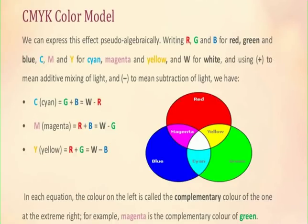We can understand the CMYK color model using pseudo-algebraically. Writing RGB for red, green and blue, and CMY for cyan, magenta and yellow, W for white, using a plus sign for additive mixing of light and a minus sign for subtraction of light. We can see that green plus blue combined give us cyan, which is a complementary color of red. If we subtract red from white light, we get cyan. Similarly, magenta is from red and blue, and yellow is from red and green.